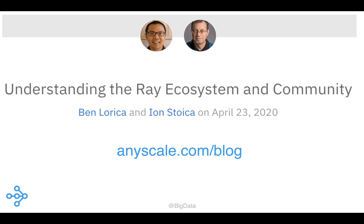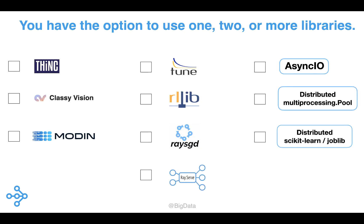These are just a few examples. We described other libraries built on top of Ray in a recent blog post, which you can find on anyscale.com/blog. Unlike other end-to-end machine learning platforms, each of these libraries and tools can be used on their own — a simple pip install and off you go. For example, if you are in need of a hyperparameter tuning library, you can use Tune without needing to introduce the other Ray libraries.